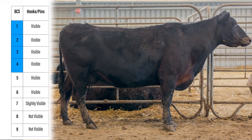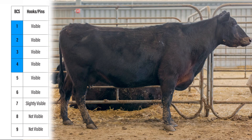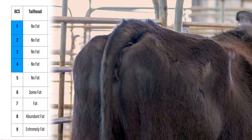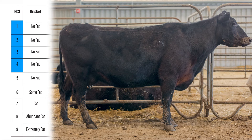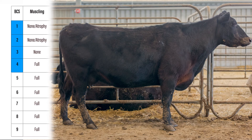As we look at the hooks and the pins on this female, they're visible and there's no fat cover over the hooks as they appear sharp. Looking at the tailhead, it's hollow surrounding this area and this female has no fat stored here. In the brisket area, there's no fat filling in this area. When we evaluate her muscling, she does have full muscling, so she's in a body condition score of 4.